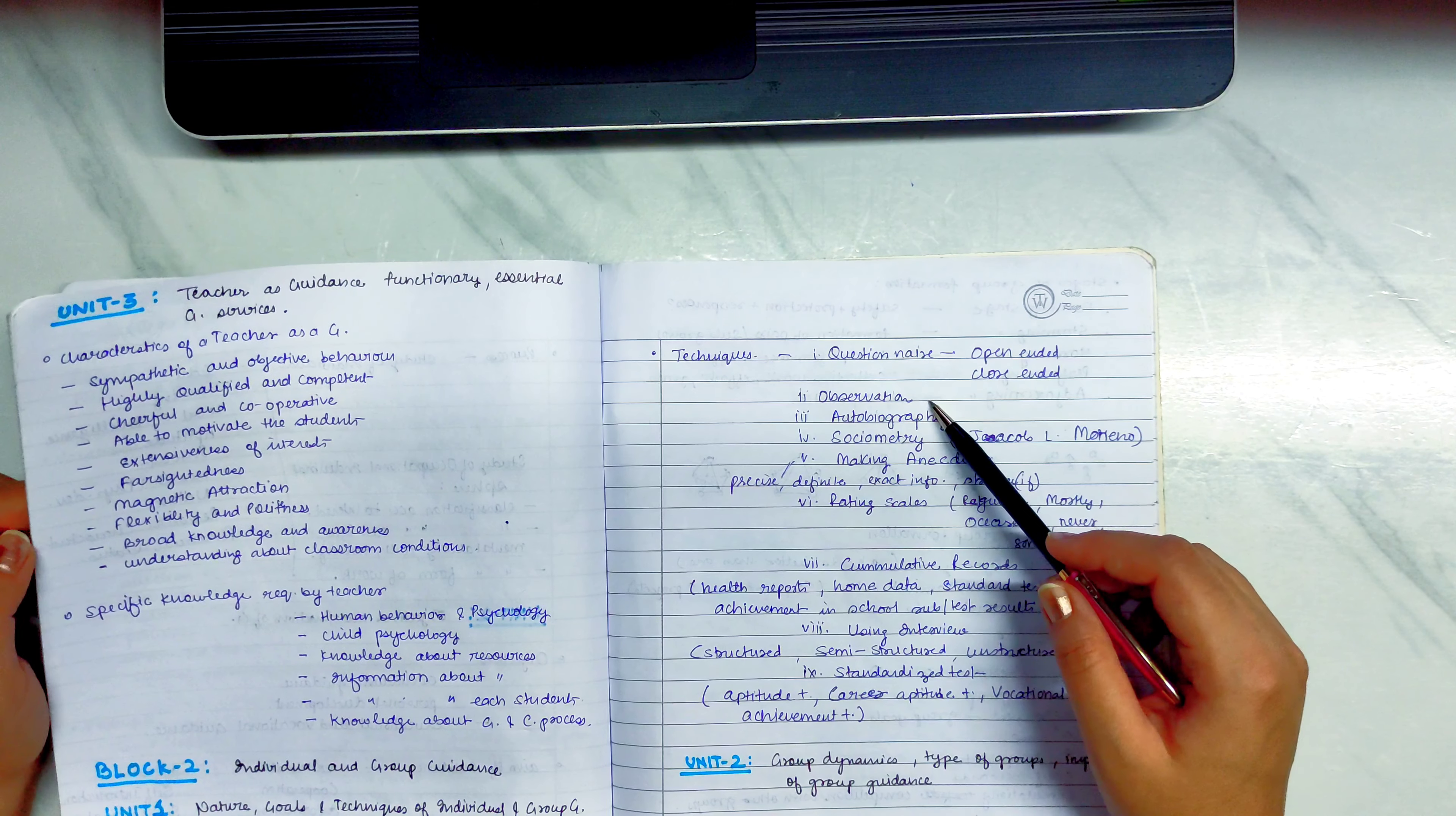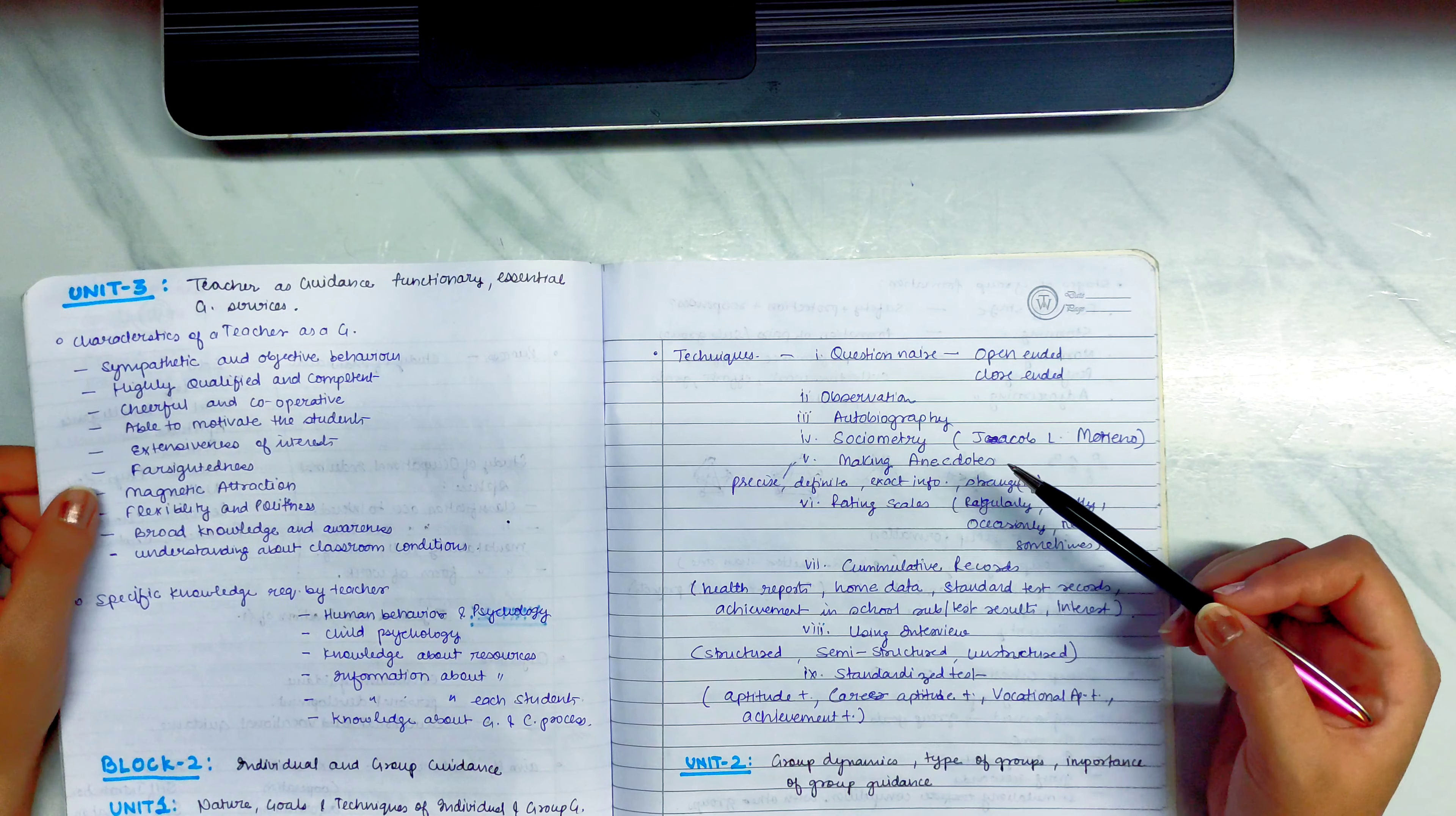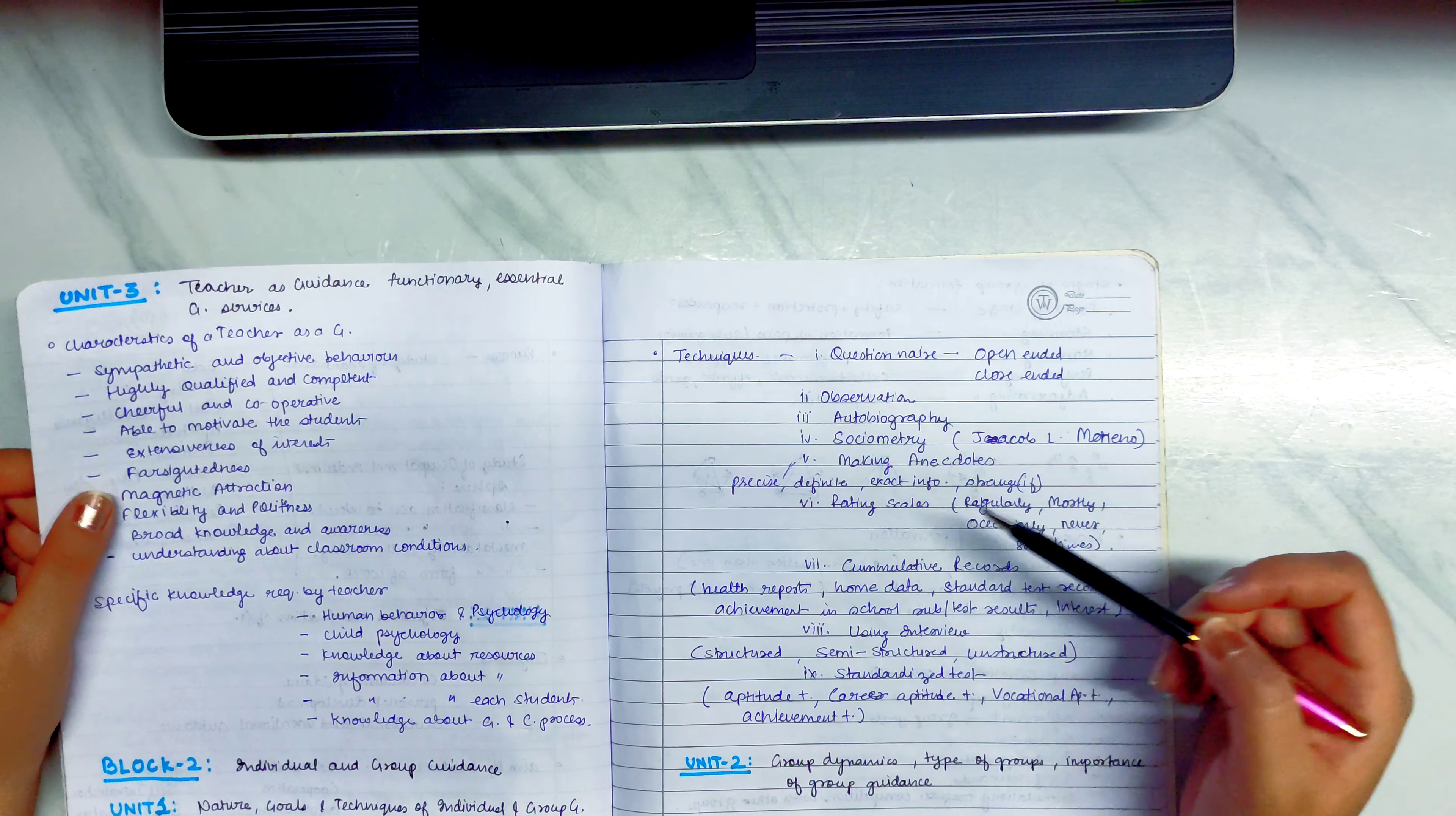Then there is the second method, technique, which you can use in group guidance. That is observation. Third is autobiography. You can tell the person to write about it and you can assess it.